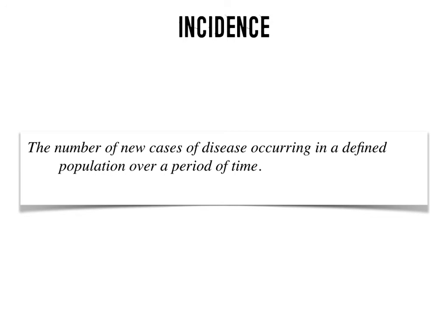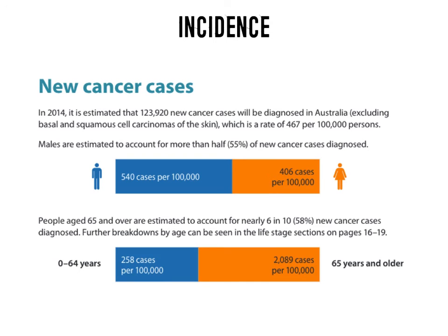Incidence refers to the number of new cases of a disease occurring in a defined population over a period of time. The difference between prevalence and incidence is that prevalence relates to the amount of people who actually have a disease, whereas incidence relates to the number of new cases over a particular period — for example, one year. In 2014, it was estimated that 123,920 new cancer cases would be diagnosed in Australia.